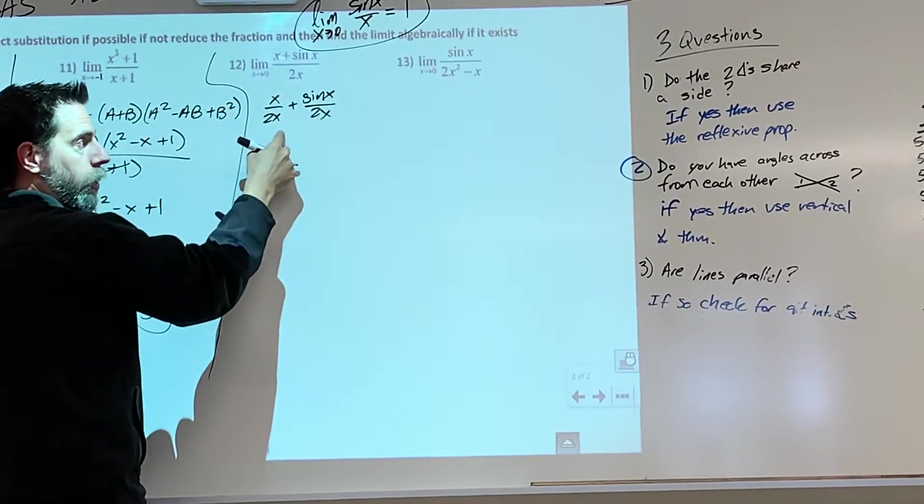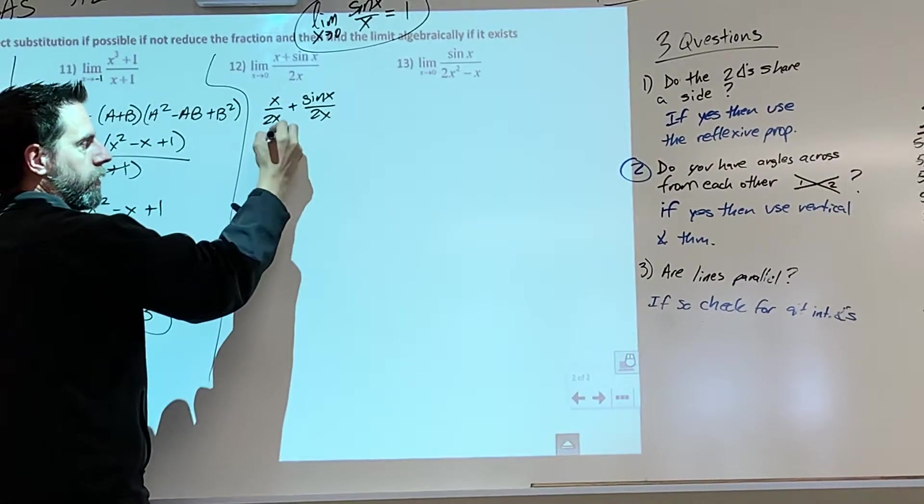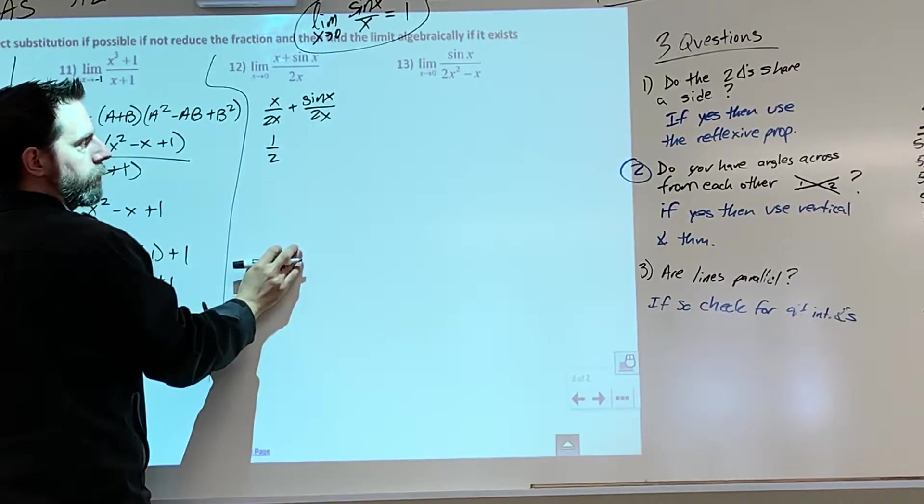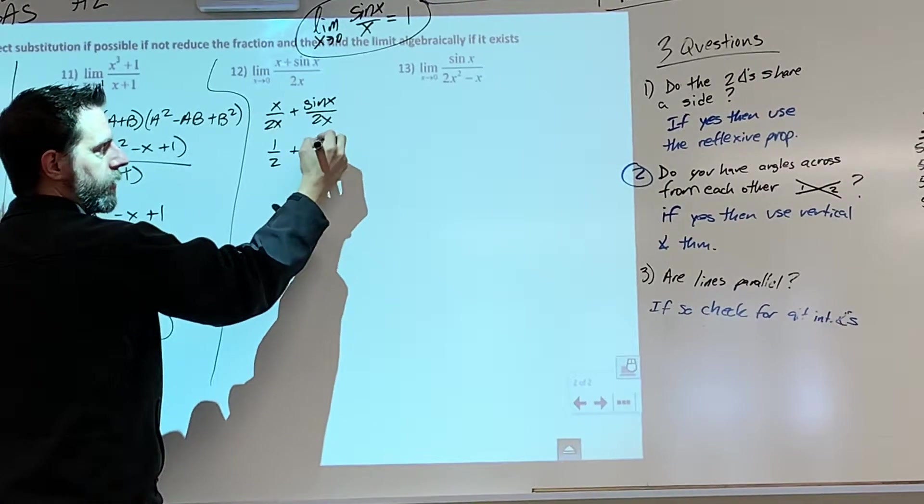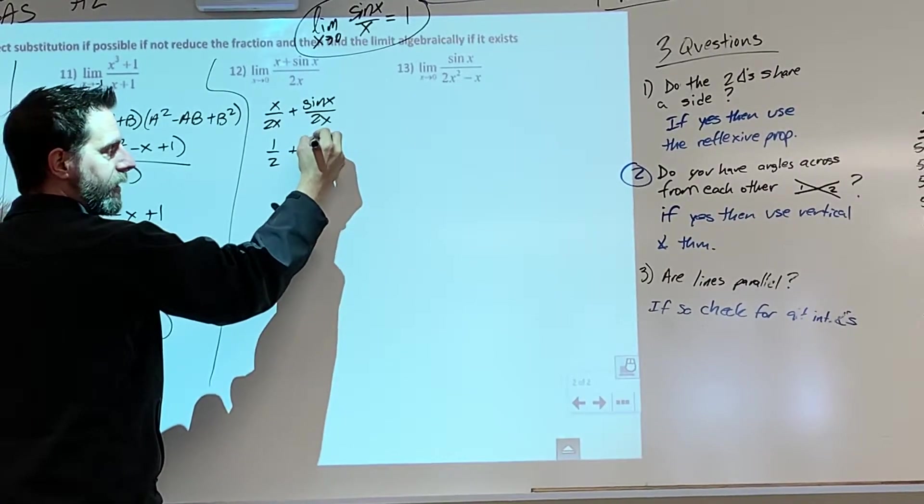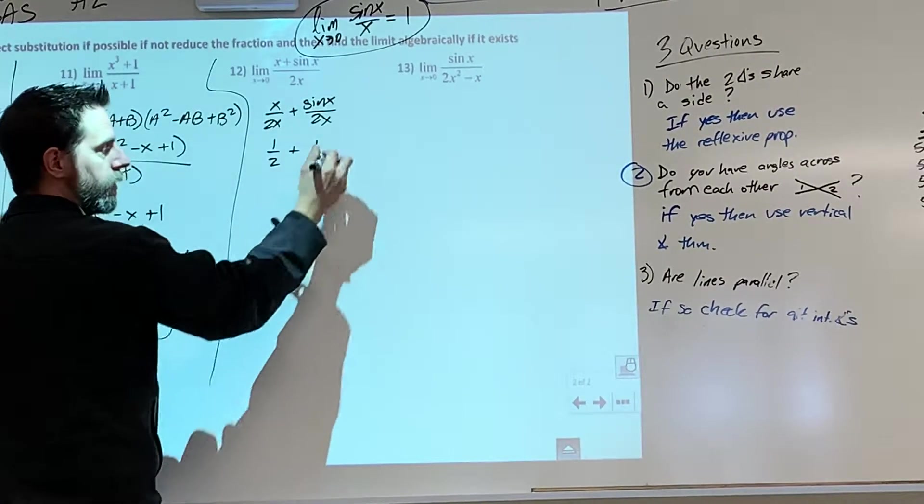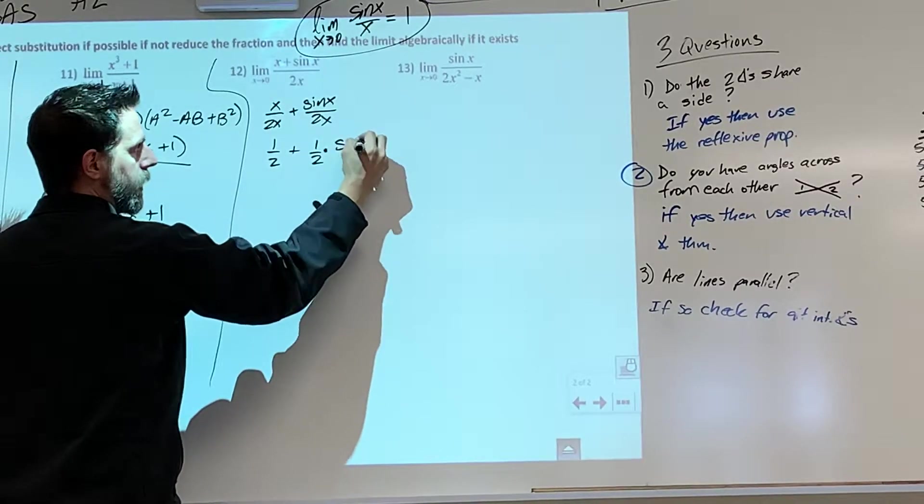The benefit to going to this is you're like, oh, this is just one half. And now watch this right here. And then isn't it also one half? Hold on, so we're going to go like this. I'm going to rewrite this as one half times the sine of x over x.